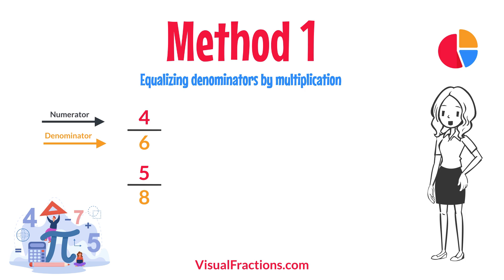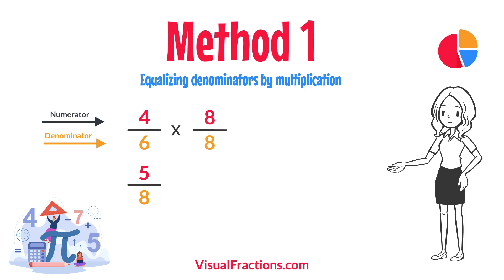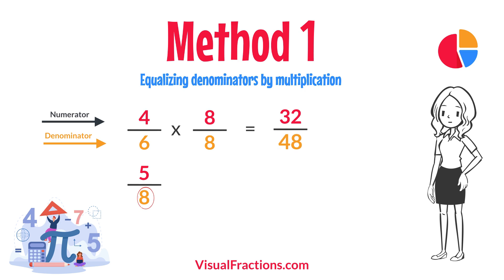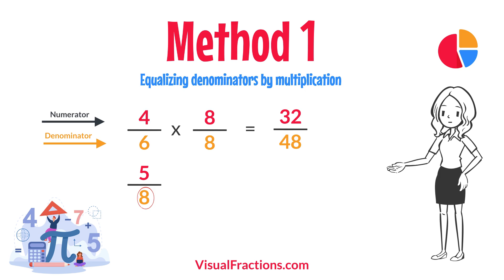For 4 sixths, multiply both the numerator and the denominator by 8, the denominator of 5 eighths. This gives us 32 forty-eighths.